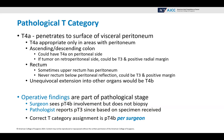Operative findings are part of pathological stage. Many times people think it's only the pathologist that gives information for pathological stage, but operative findings are crucial, especially in the colon and the rectum. So let's say the surgeon sees pT4B involvement but does not biopsy those areas — the pathologist reports pT3 since that is only based on the specimen they received. The correct T category assignment is pT4B per the surgeon. Remember, you have to use all of this information. You cannot stage from a path report alone.